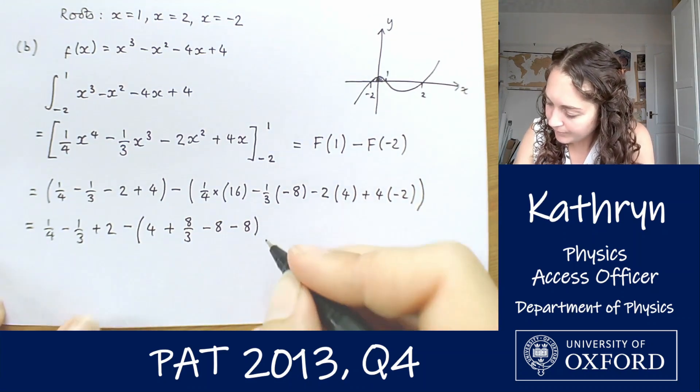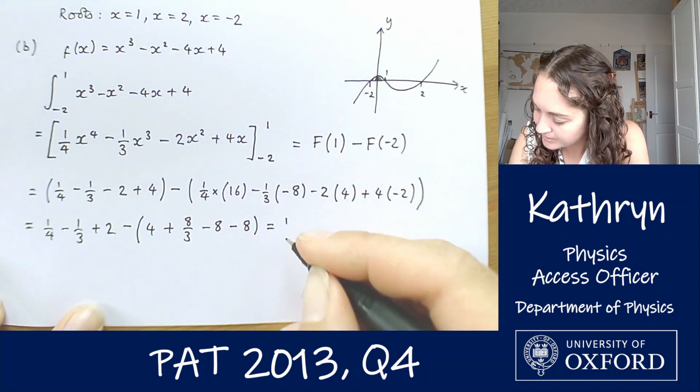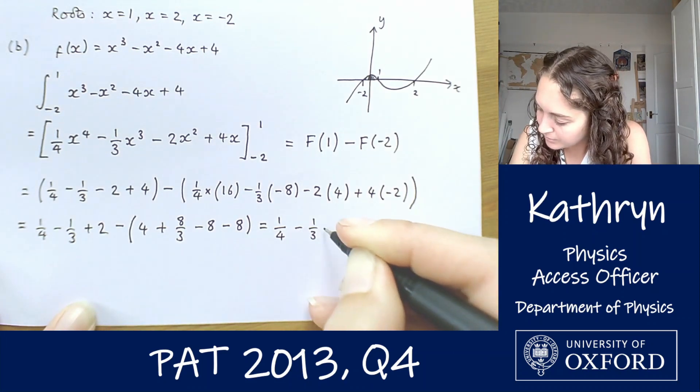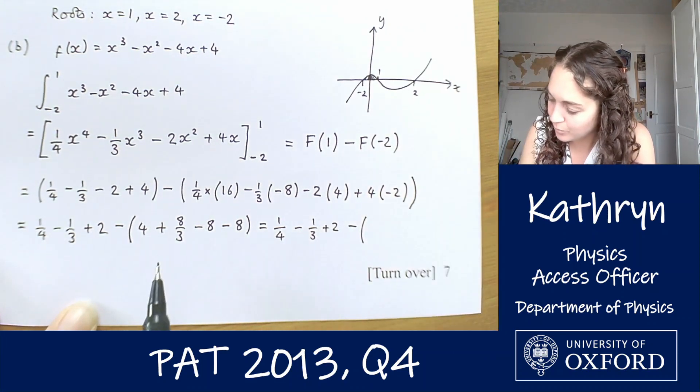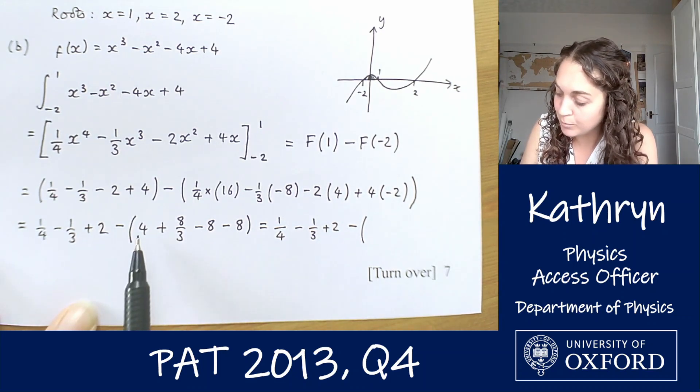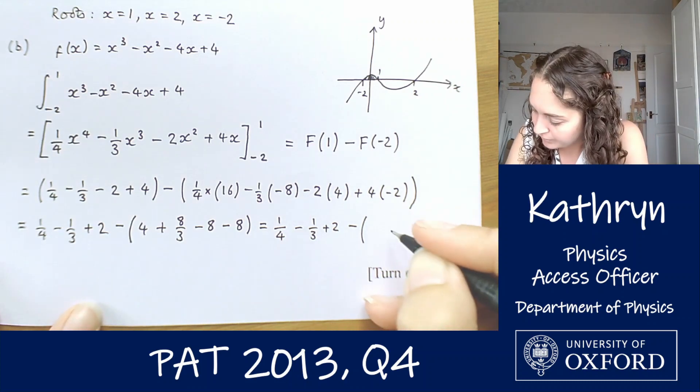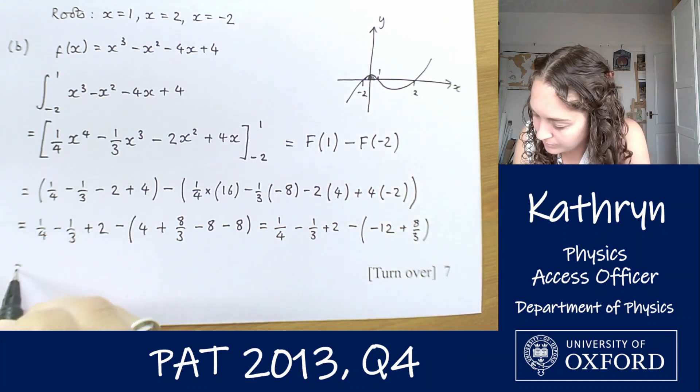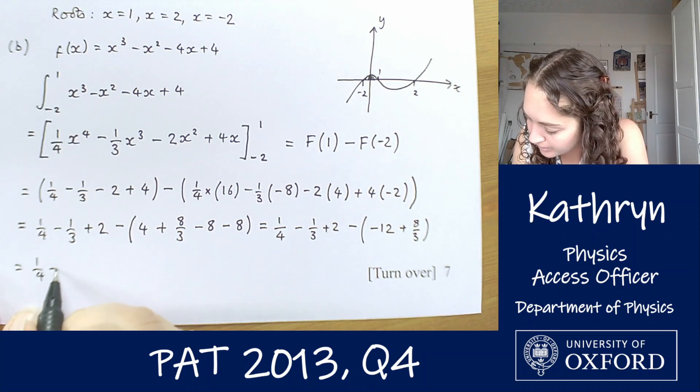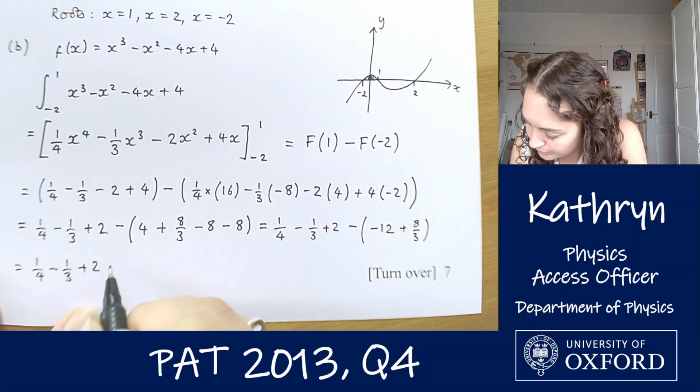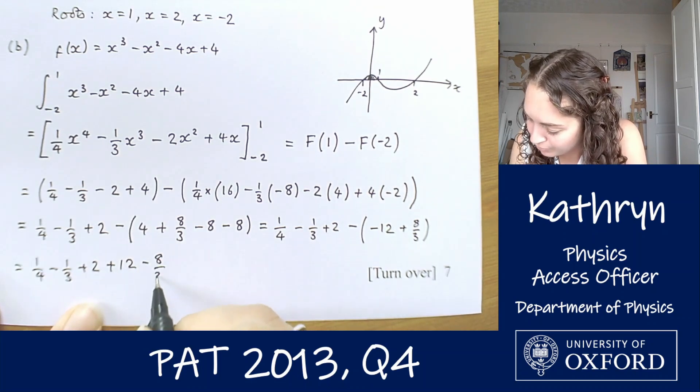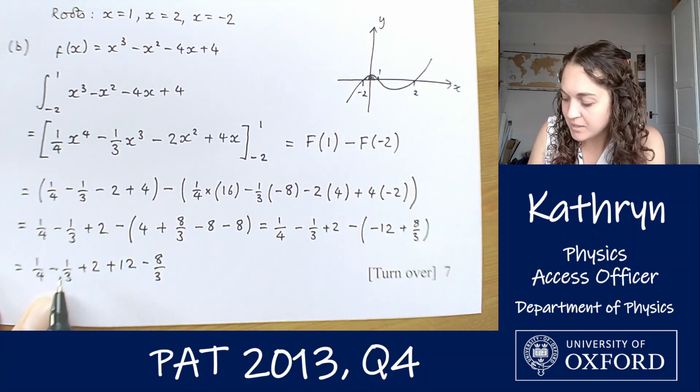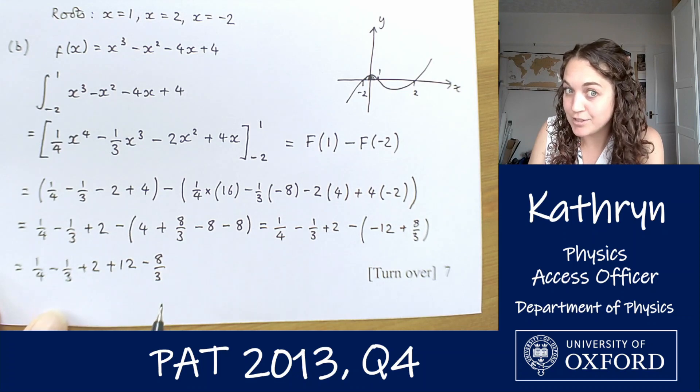Let's simplify this one a little bit more before we take it out of the bracket. So that is a quarter minus a third plus 2 minus, and then we've got minus 8 minus 8 is minus 16. Minus 16 plus 4 is minus 12. So we've got minus 12 plus 8 over 3. So now we've got one quarter minus one third plus 2 plus 12 minus 8 over 3. The minus one third minus 8 over 3, that's minus 9 over 3. 9 over 3 is just 3, so that's just minus 3.